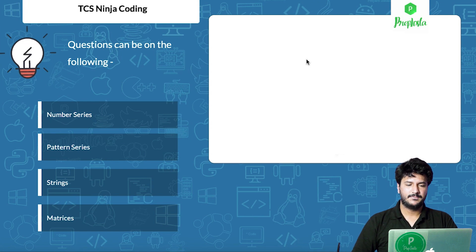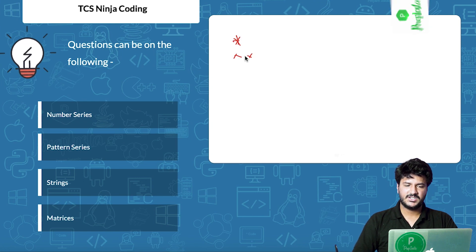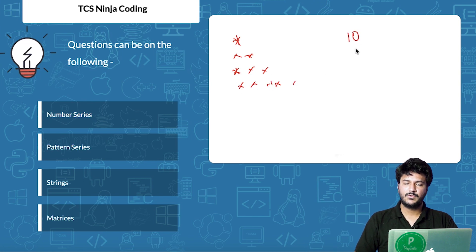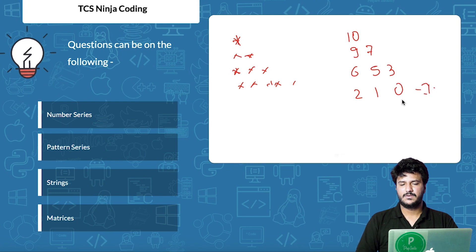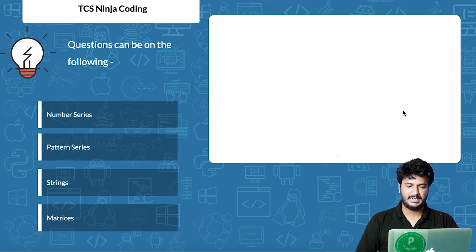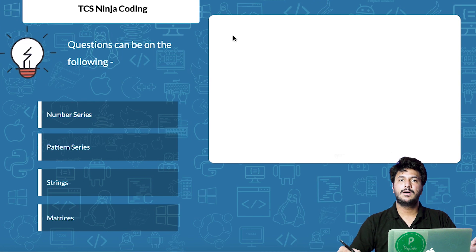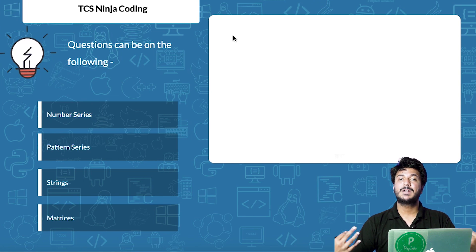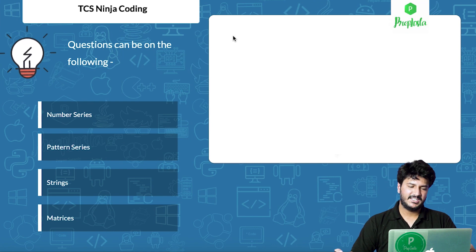Then there are pattern series questions — for example, printing a star on the first line, star star on the next, star star star on the next, and so on. Or a slightly harder pattern like 10, 9, 7, 6, 5, 3, 2, 1, 0, -1. There could also be string questions where you take a string as input and capitalize the whole string, or just capitalize the consonants, or decapitalize the vowels.